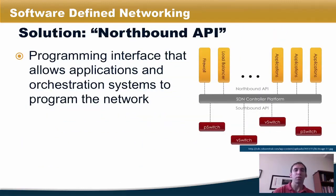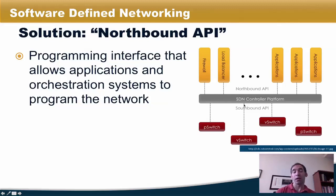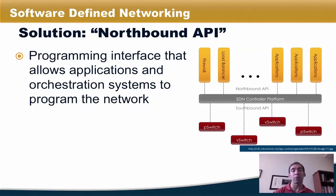The solution to this problem is to develop what is being called a northbound API. The northbound API is a programming interface that allows applications and other orchestration systems to program the network at a higher level of abstraction. Thus far we have been talking about SDN controllers that use a southbound API like the OpenFlow control protocol to control flow table entries in switches. But if we want to implement more complex policies and applications, we would like to develop an API that the controller exposes to higher level applications, such as firewalls, load balancers, and so forth.